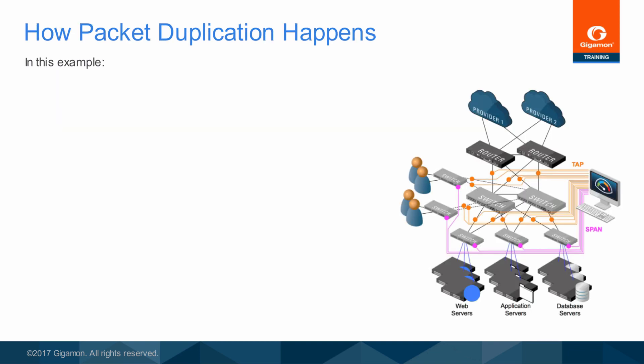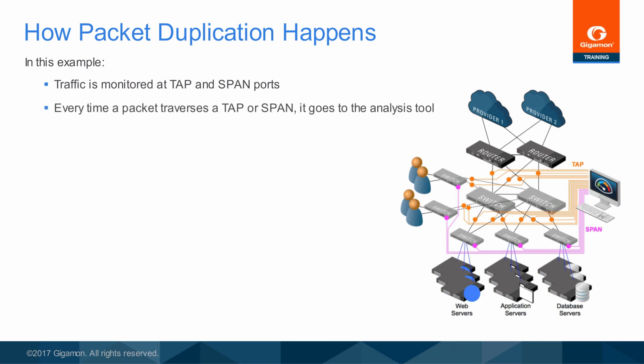In this network example, the core physical links have taps installed, so traffic flowing across those links can be monitored and analyzed by the tools. Span ports have been configured on the access switches so that access layer traffic may also be monitored and analyzed. Packets traveling across those links are sent not only to the other end of the link, but also through the tap or span to the analysis tool.